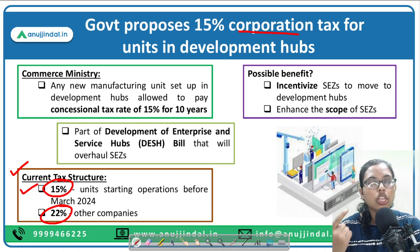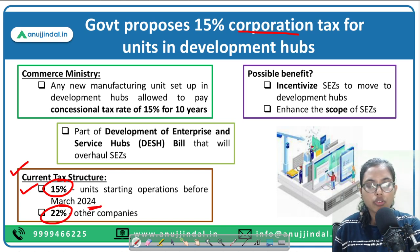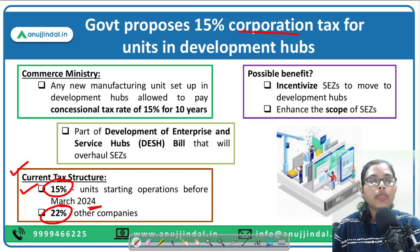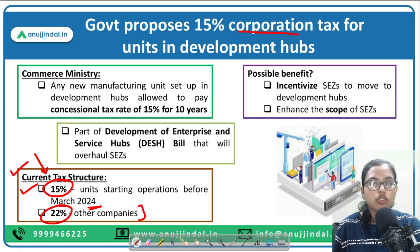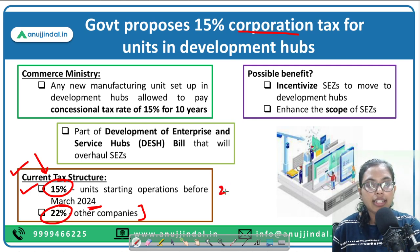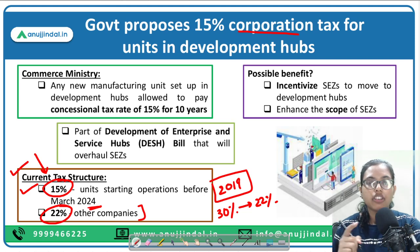The 15 percent rate is given to any new manufacturing units starting operations before March 2024 — the deadline was extended from 2023 due to COVID. Any new manufacturing company starting operations before 2024 pays only 15 percent concessional tax. The remaining existing companies pay 22 percent. The Finance Minister reduced corporation tax from 30 percent to 22 percent.